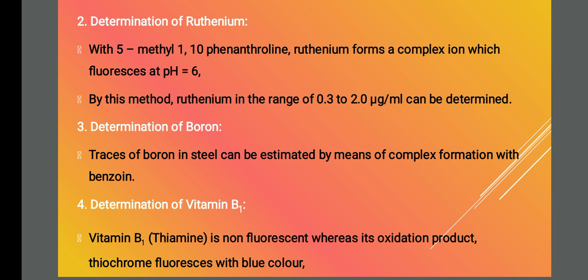Ruthenium forms a complex with 5-methyl-1,10-phenanthroline and this fluoresces at a pH of 6. Using this fluorometric method we can estimate ruthenium in the range of 0.3 to 2 microgram per mL.